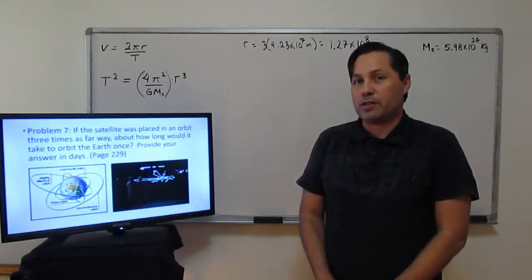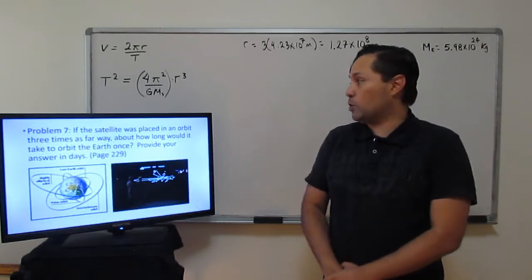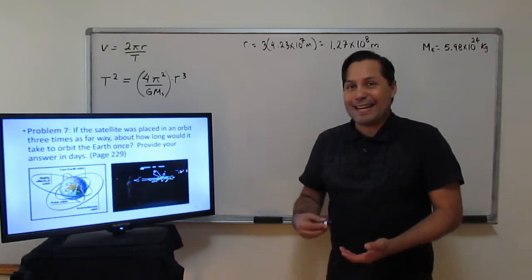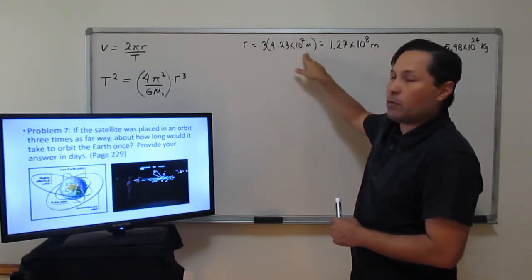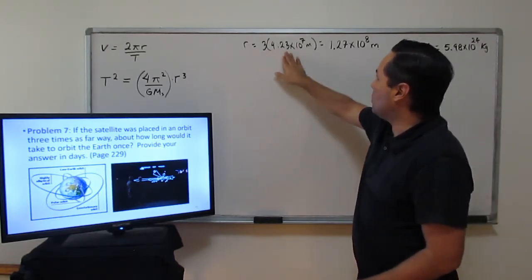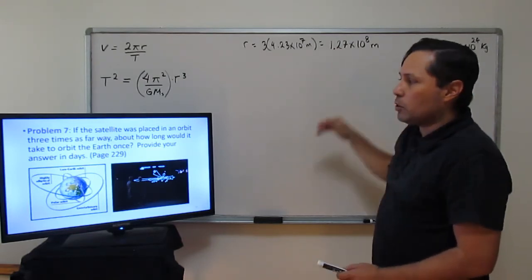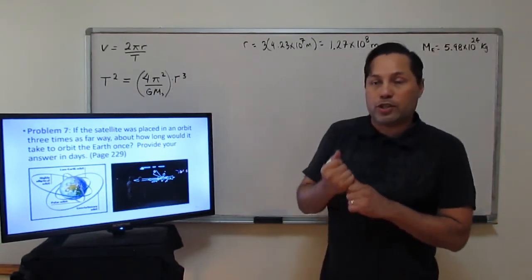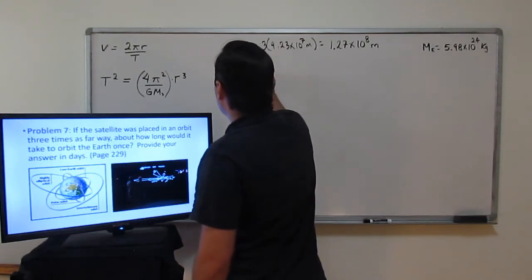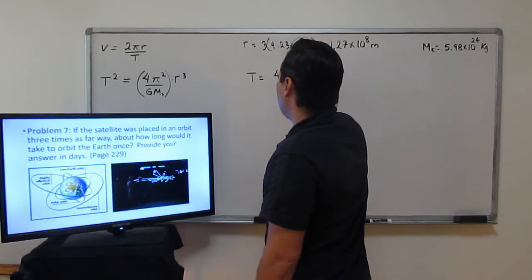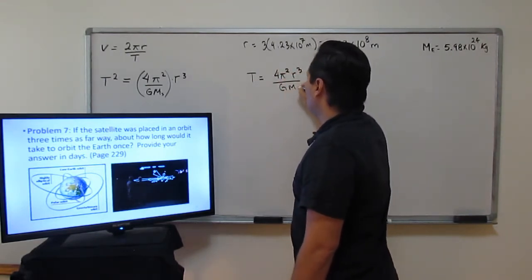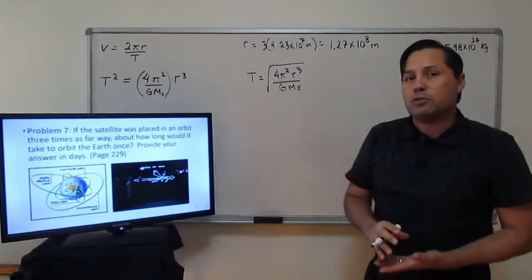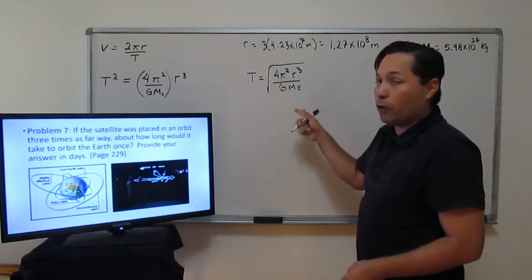Problem 7: If the satellite from the previous problem is placed in an orbit 3 times as far from the center of Earth, how long would it take to orbit Earth once? We take the previous radius and multiply by 3, giving a new radius of 1.27×10⁸ meters. We use Kepler's third law rearranged for T: T equals the square root of (4π²r³) / (G × Me). We isolate T by square rooting both sides since we want T, not T².